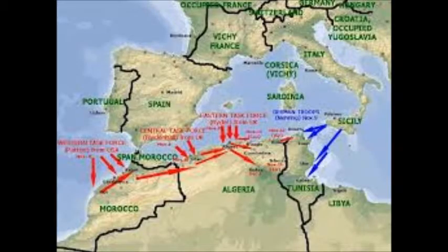Operation Torch was the main turning point of the African Campaign. It was an Allied invasion to attempt to pincer the Axis forces by storming the Vichy French position, as the Allies expected it to have little resistance, but the Vichy French put up a good defence and still failed.